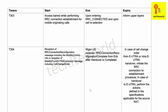T303 is related to access barring. It starts while performing RRC Connection Establishment for a mobile originating call (MO call). When the RRC Connection Establishment is initiated for an MO call, T303 starts. It ends when RRC is connected, and upon expiry it informs the upper layer that T303 has expired and the process has ended.